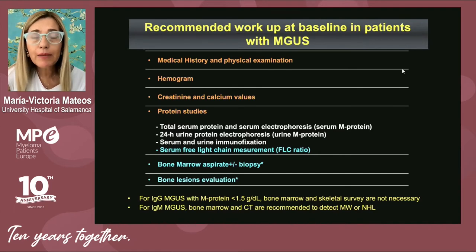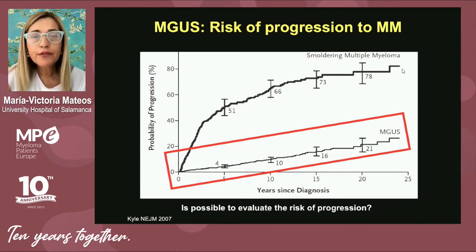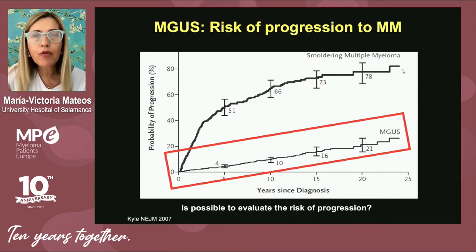When the MGUS monoclonal component is IgM, the physician will usually order a CT to evaluate for adenomegalies and adenopathies, because of the probability of progression to a different type of disease — Waldenström's macroglobulinemia. Overall, and this is a very important message for patients: the risk of progression to multiple myeloma for patients with monoclonal hemopathy is very low — 1% per year. This means a 10% risk at 10 years, 20% at 20 years, and most patients will never progress to multiple myeloma.